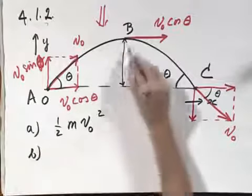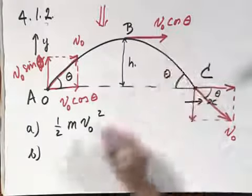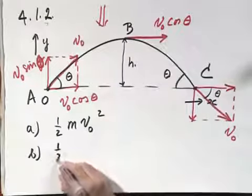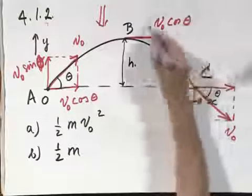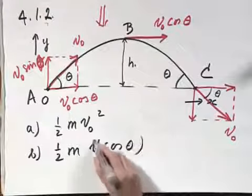What is the potential energy at point B? The only velocity at point B is the horizontal component, so it is one half m times this velocity squared, which is v zero cosine theta squared.